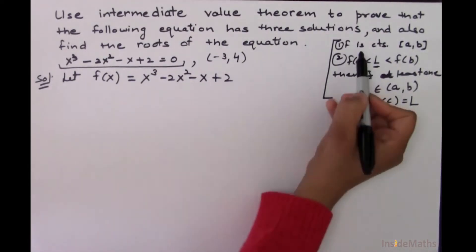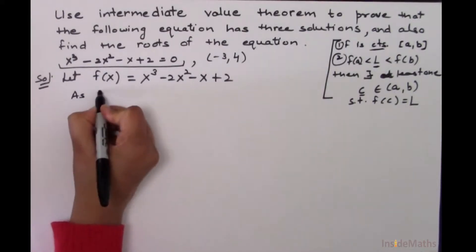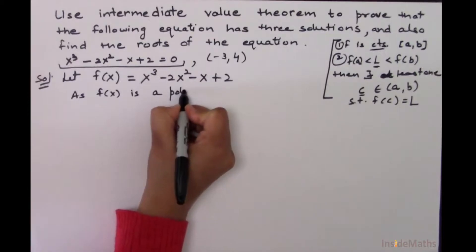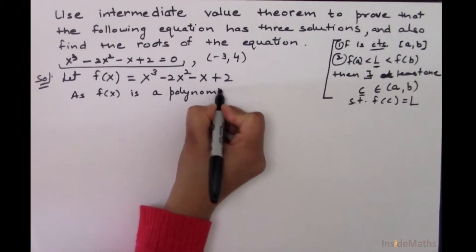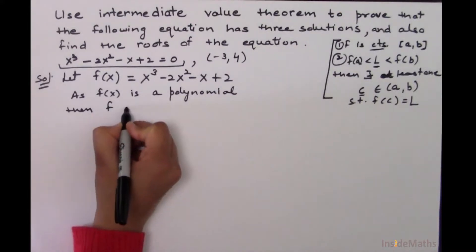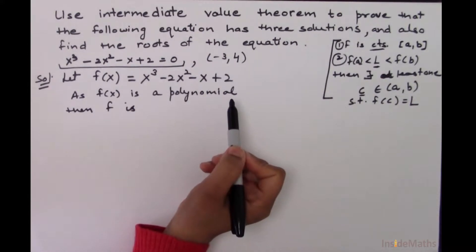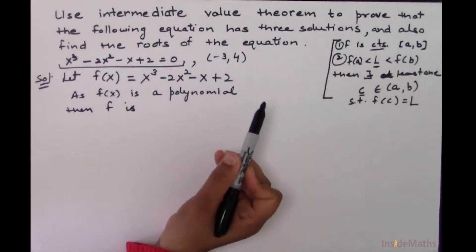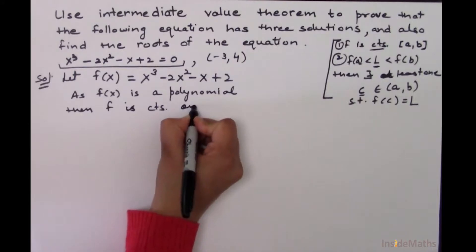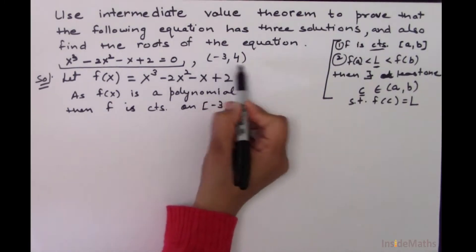The first condition is that the function should be continuous. Since f of x is a polynomial, and all polynomials are continuous on the whole real number line, f is continuous on the closed interval minus 3 to 4, which is our given interval.